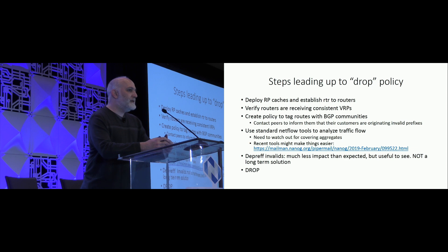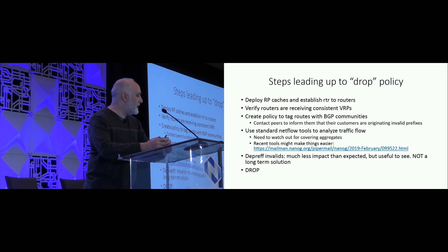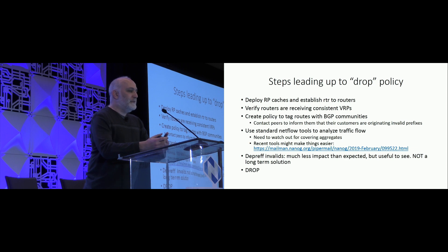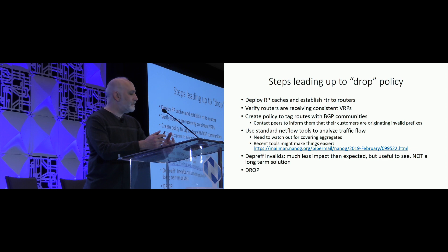We also started reaching out to several of our peers who had customers that are originating invalid routes, letting them know they have customers that are doing bad things, and communicating that this is going to be an impact at some point. One gotcha that the fancy new tools account for — and we had to do manually — is you have to watch out for things that have a valid or unknown covering aggregate block, so even though the more specific might be invalid, you're not going to lose connectivity to that when we drop those invalids. The trick is to do the analysis in such a way that it's only impacting the prefixes that you actually are going to completely lose visibility to.